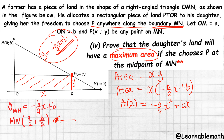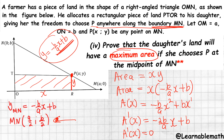Differentiating A(x) = −(b/a)x² + bx, we get A'(x) = −(2b/a)x + b. We then equate the first derivative to zero to find which x-value maximizes the area. We need to show that x-value is a/2, which is the x-coordinate of the midpoint of MN.